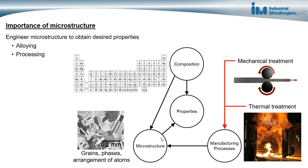The importance of microstructure is that we can engineer it to obtain desired properties. The microstructure of a metal has a direct influence on the properties of a metal. We can influence the microstructure through its composition by adding different alloying elements, and by using different manufacturing processes. This includes mechanical treatments such as cold working, hot rolling, or extrusion, and also thermal treatments such as various heat treating processes. These manufacturing processes influence the microstructure, which influences the properties of metals. So by understanding the factors that influence microstructure, we can engineer it to obtain the desired properties for a particular application, using alloying and processing.